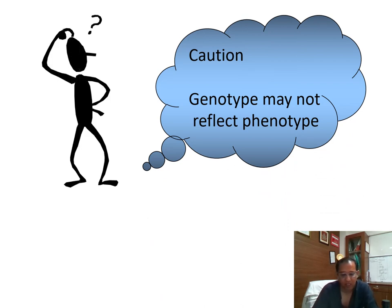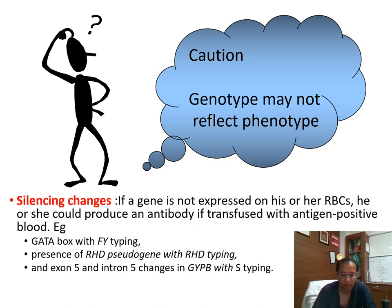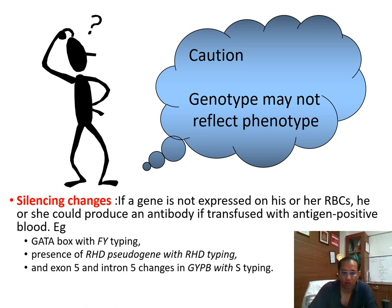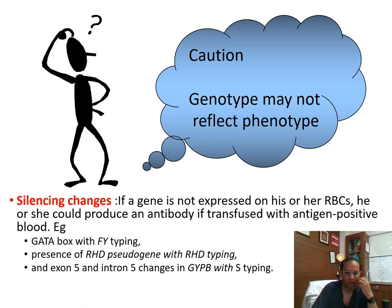Genotype may not always reflect the phenotype, so molecular genotyping cannot entirely replace hemagglutination-based phenotyping. This occurs when there is a silencing change in a region other than where the conserved SNP is located. This matters especially when a gene is not expressed on RBCs — you may anticipate the gene is present, but since it is silent, the person could produce an antibody if transfused with antigen-positive blood. Examples include Duffy, Kidd, RhD, and S blood group systems.